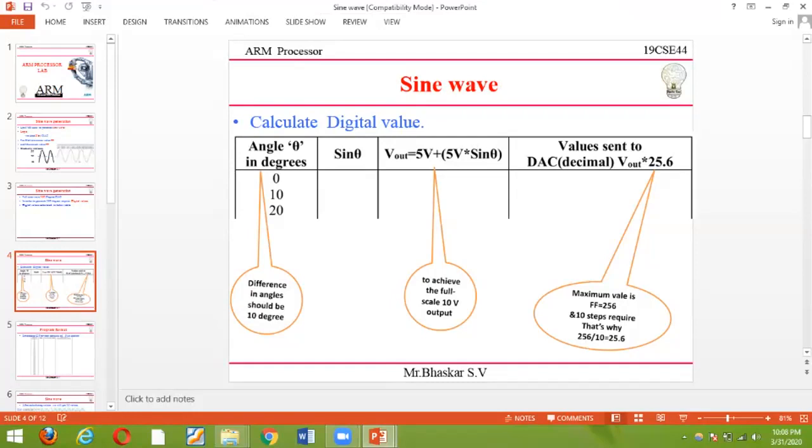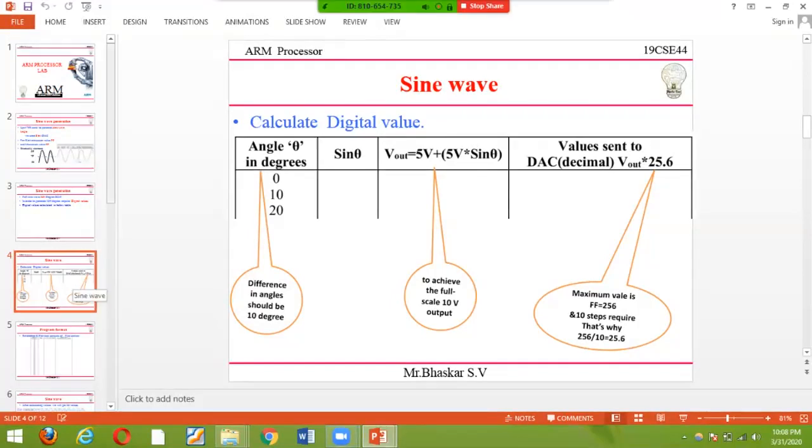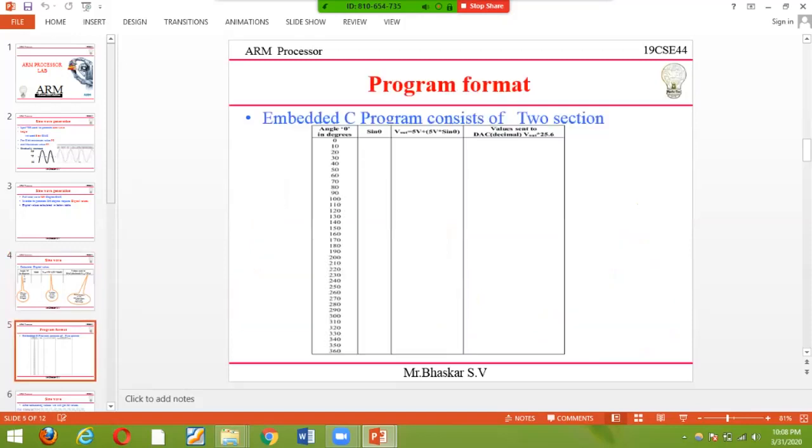I have 256 levels and require 10 steps, so 256 divided by 10 gives 25.6. The maximum value is 256, and for 10 steps that's 25.6. I convert these values to get my final output values. Make your table in your observation and find all the values for 360 degrees.